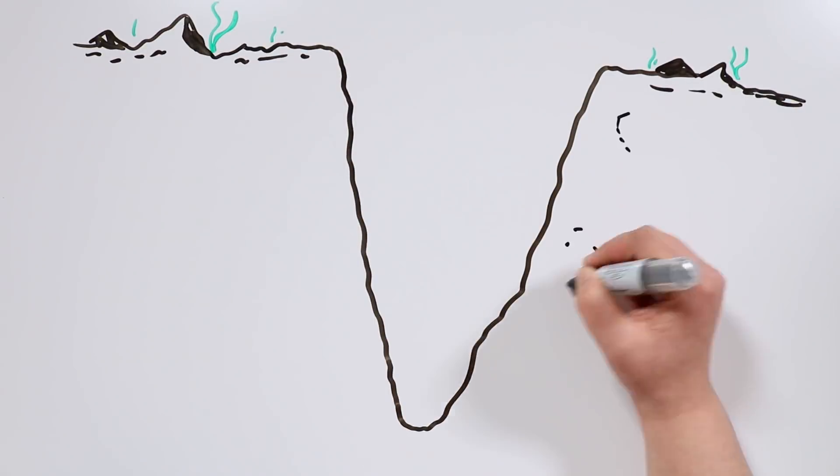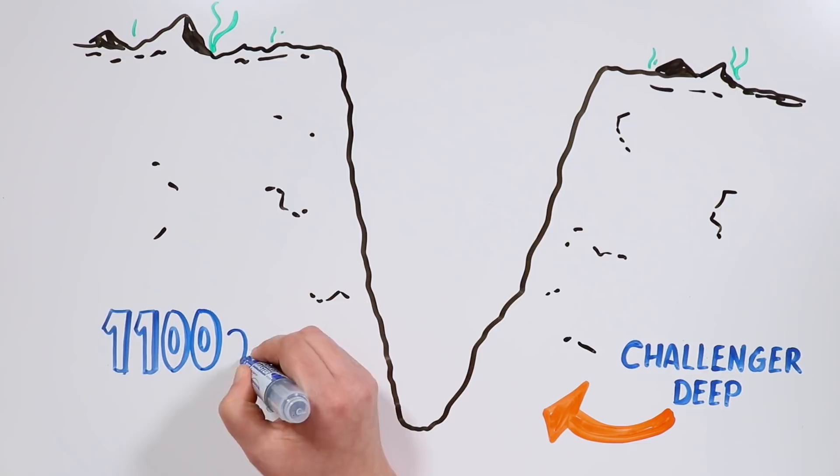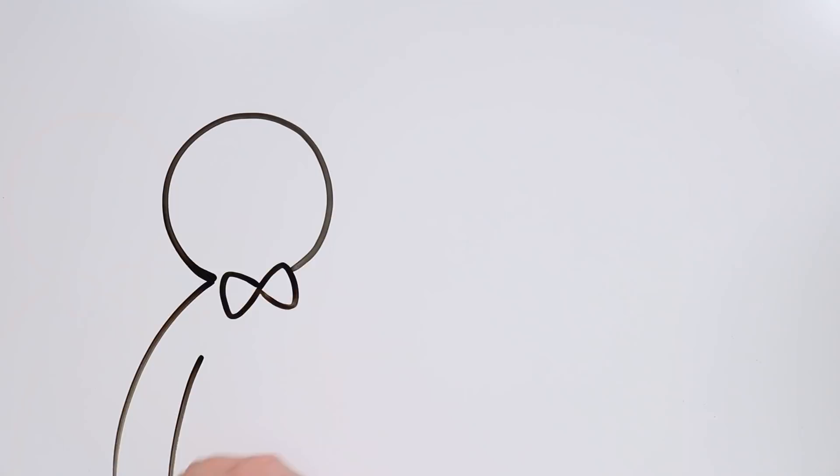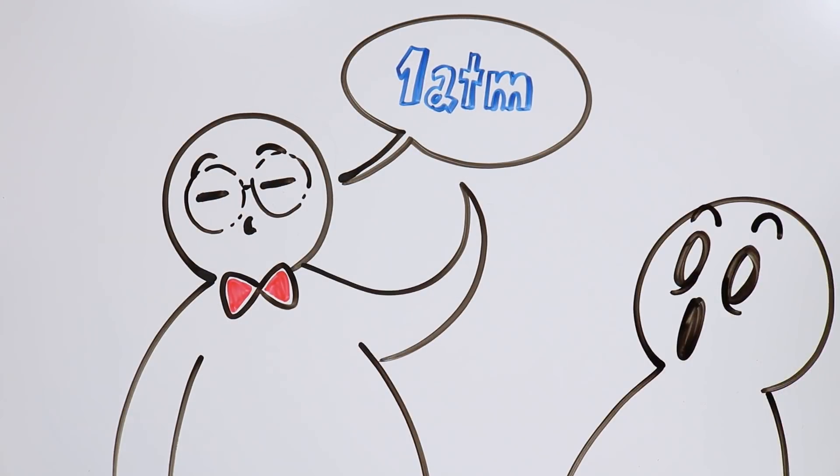The lowest point of the trench is called the Challenger Deep. The pressure there is of more than 1,100 atmospheres, so if we keep in mind that the normal pressure on Earth's surface is of 1 atmosphere, the difference is huge!